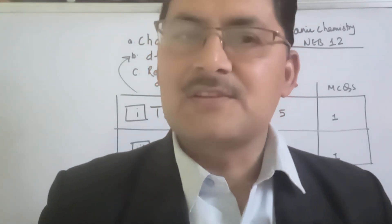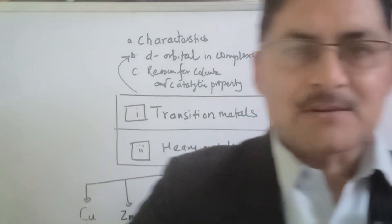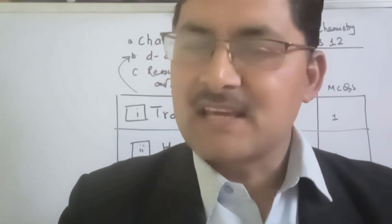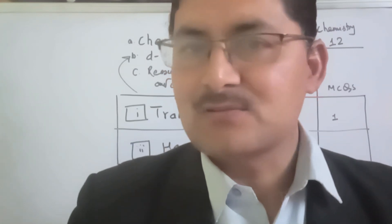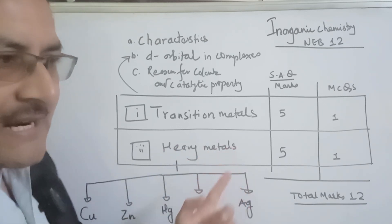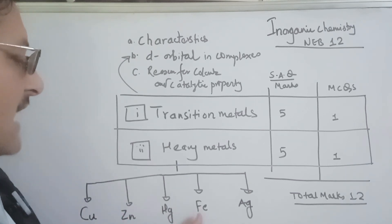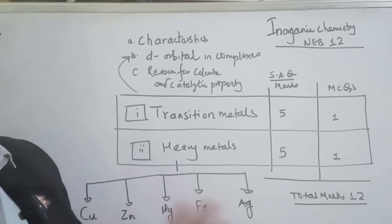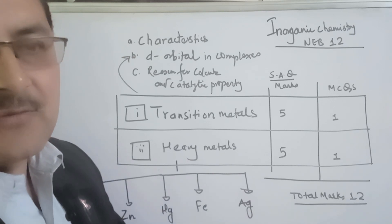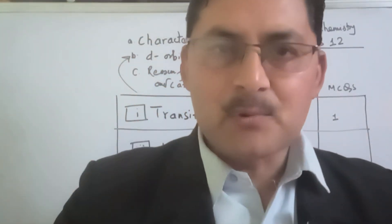Complex compounds are used in our lives. I will show you the complete video on transition metals and heavy metals — copper, zinc, mercury, iron, and silver — covering all their properties and important components.